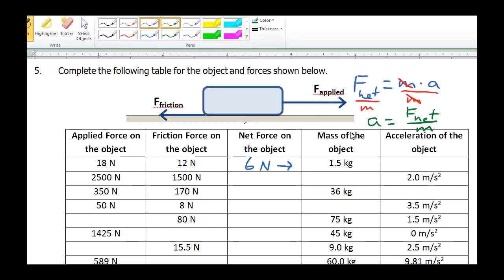So to finish in this table, the acceleration is going to be 6 newtons divided by 1.5 kilograms. And 6 divided by 1.5 is 3.0 meters per second squared.